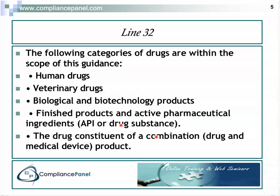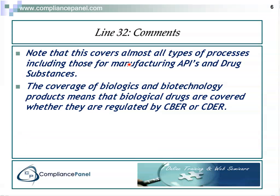If you have a combination product, it is the drug portion that is covered — and this could be a biologic. It would be the drug portion of, say, a drug-medical device product, or a so-called biological device. These are the things covered within the scope of this guidance. Remember that APIs are also controlled — this is raw material coming into your plant, usually made by a group other than the people who make the final products, so there needs to be good communication with these people.